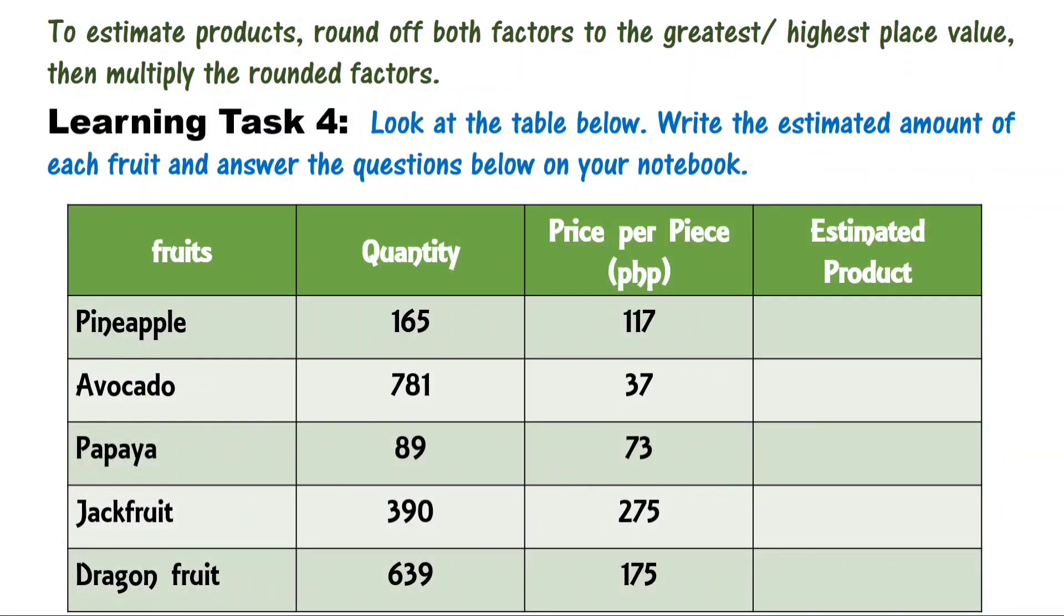Look at the table below, write the estimated amount of each fruit and answer the questions on your notebook. The estimated amount of pineapple is 20,000. The estimated amount of avocado is 30,000. The estimated amount of papaya is 6,300. The estimated amount of jackfruit is 120,000, and the estimated amount of dragon fruit is 120,000.